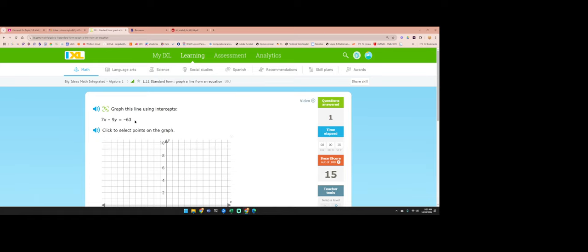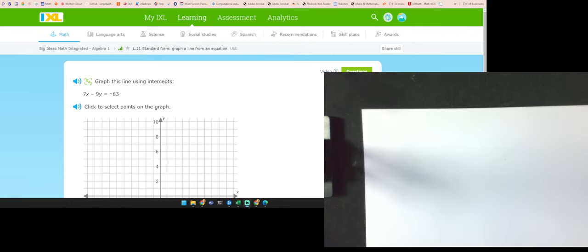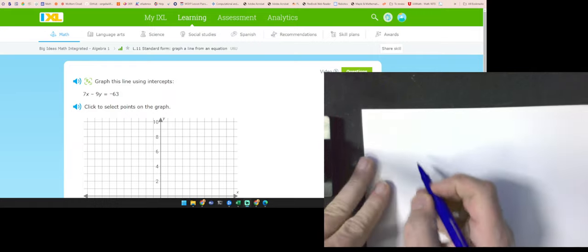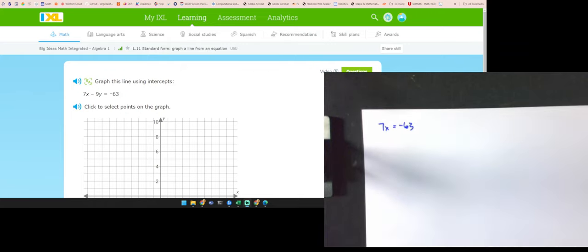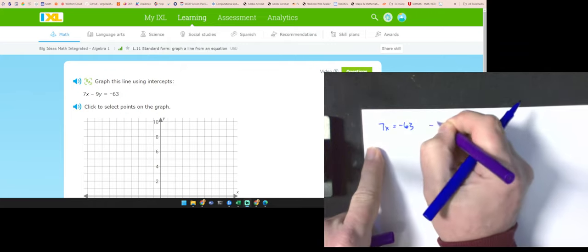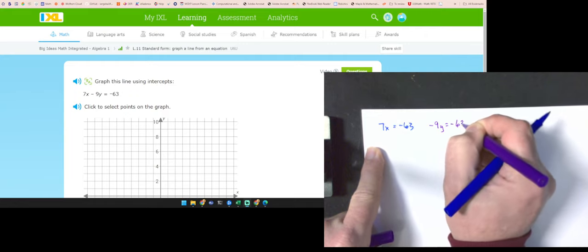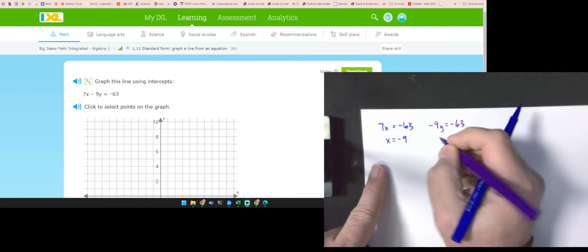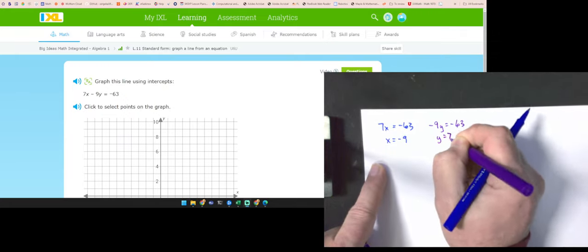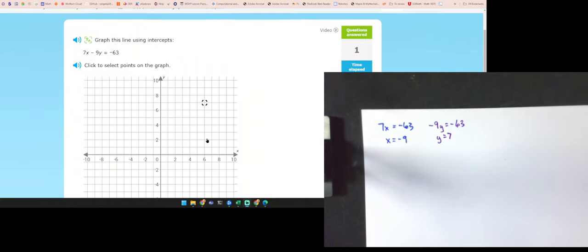If I cover up the X's, I'm actually going to put the thing over here. So the two equations I'm going to have are 7X equals negative 63. The second one is negative 9Y equals negative 63. So my X is equal to negative 9, my Y is equal to 7. So my Y is 7, my X is negative 9.